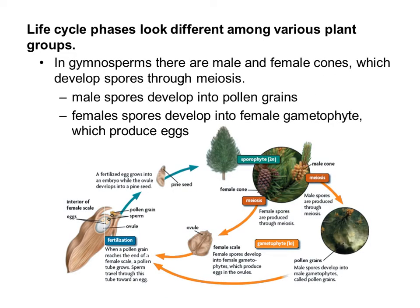In gymnosperms, which are the cone-bearing plants, there are male and female cones that develop spores through meiosis. The male spores develop into pollen grains, and the female spores develop into the female gametophyte, which produces eggs. The male cones release their pollen — which honestly brings to mind cedar fever — and then the pollen fertilizes the female egg inside the female cones, developing into an actual seed.